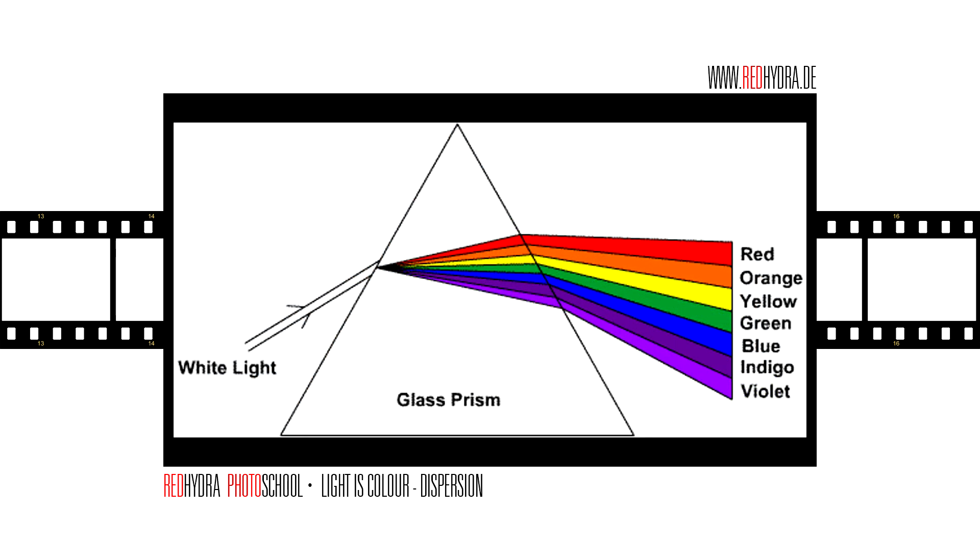Since the index of refraction is different for each color and material, the angle of refraction will be different for each color when light passes from air into glass or another transparent material, as I previously mentioned.